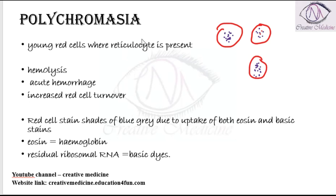In polychromasia, the red cells will stain with shades of blue and grey. Why? Because of the eosin and basic stains. When you do eosin and basic stains, you will see that they will always stain with reddish or bluish grey.